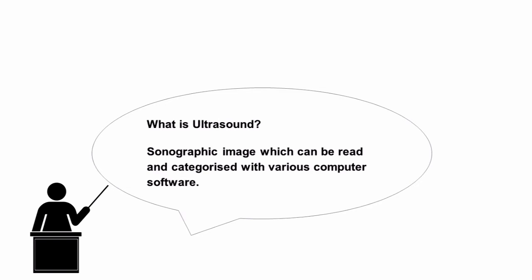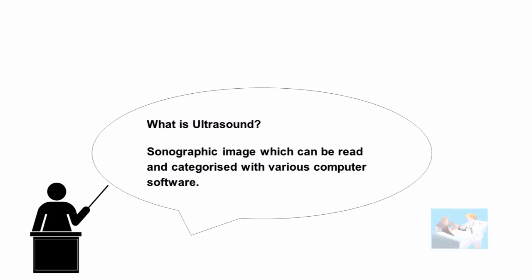What is ultrasound? The waves are emitted from a transducer which makes contact with the maternal abdomen and moves to a particular part of the uterus. At this frequency, they are reflected back from the internal surface, producing a typical sonographic image which can be read and categorized with various computer software.